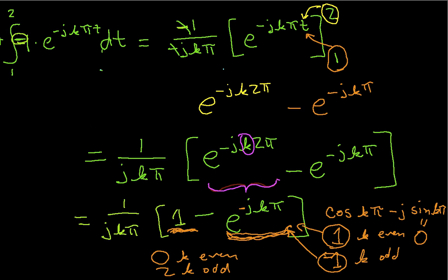Okay, so what that means is that this term in our integral, I can actually write very simply now as being 2 over jkπ when k is odd, or 0 when k is even. Green was sort of a goofy color to choose there.